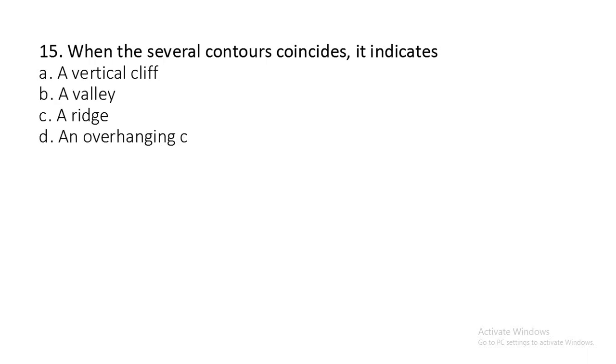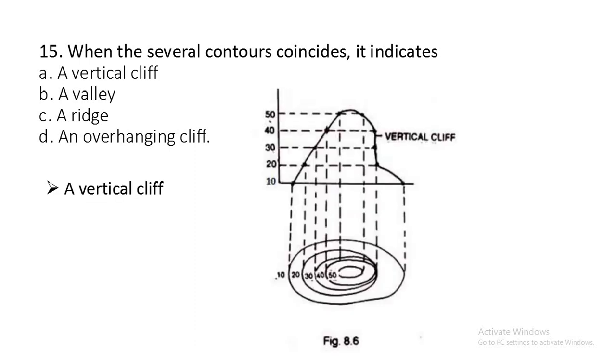Question number fifteen: When several contours coincide, it indicates a vertical cliff, a valley, a ridge, or an overhanging cliff? It is a vertical cliff. As in the figure, you can see the contours of 20, 30, 40, and 50 meeting at a point where there is a vertical cliff.